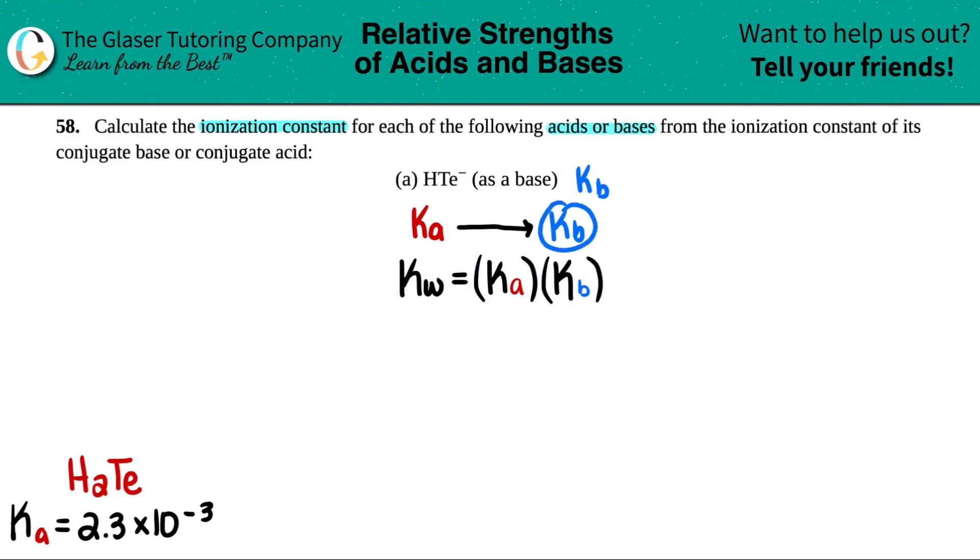Now, if we're trying to solve for Kb and we want to get Kb alone, what we would do to both sides is if you want to get this by itself, you would divide by Ka. This would cancel. And now you have Kw divided by Ka equals Kb.